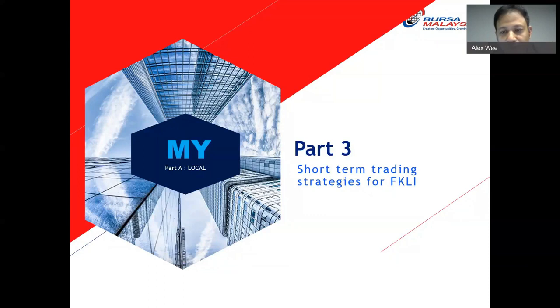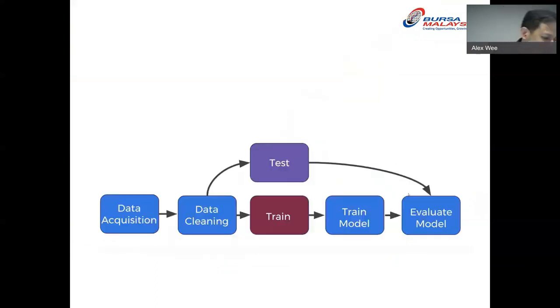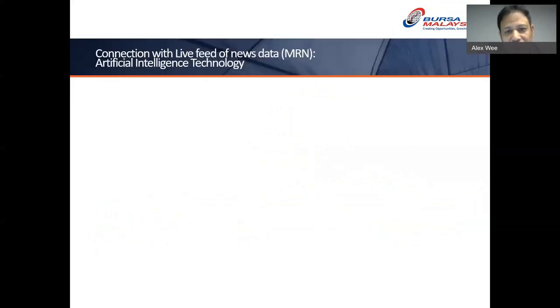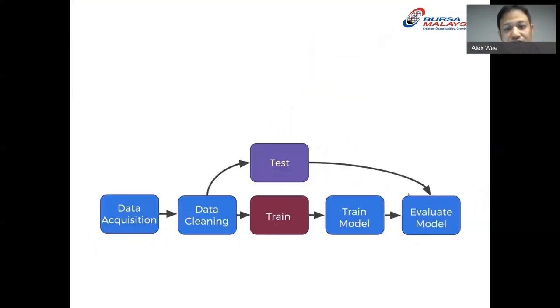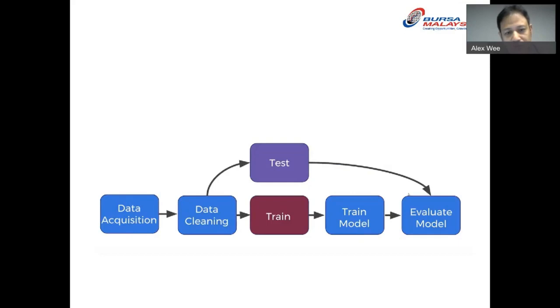We have actually tested this out and it is successful. Now, for the short-term trading strategy for FKLI, let me talk specifically about machine learning. Machine learning includes data acquisition, cleaning, training the model, evaluating the model, and repeating until the model is effective. I want to talk about what type of data the machine is getting.